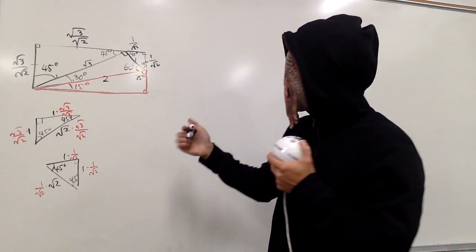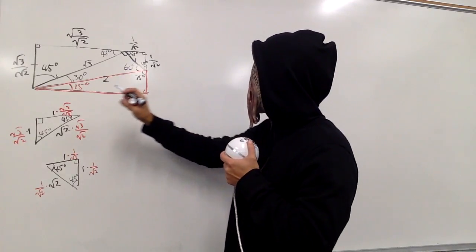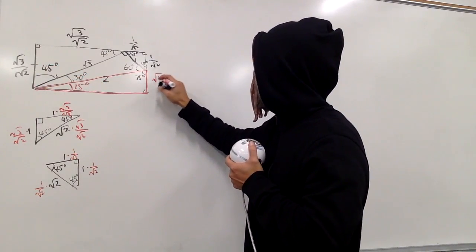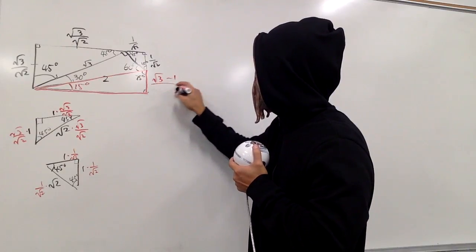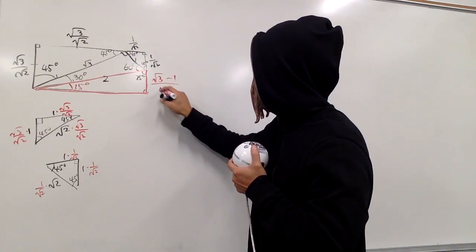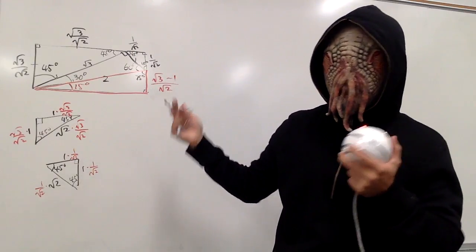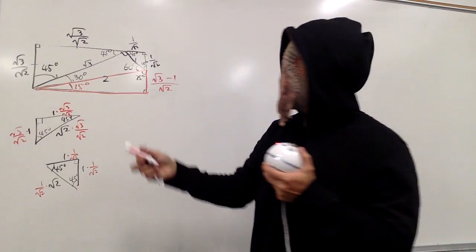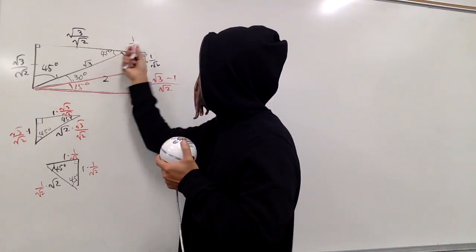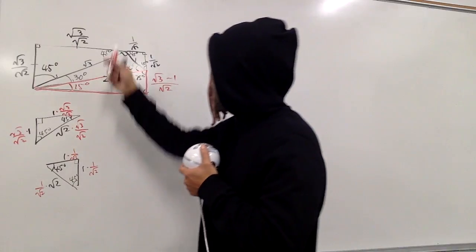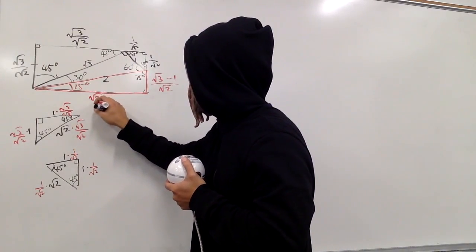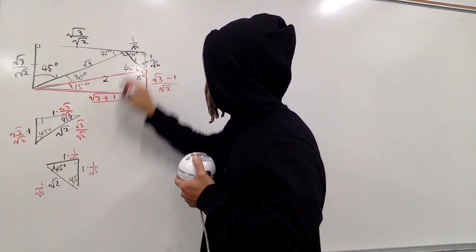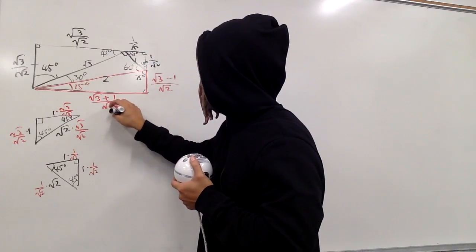I will just put it together for you guys. In other words, it will be square root of 3 minus 1 over the same denominator, which is square root of 2. How about the side down below? Well, it's just going to be this plus that: square root of 3 plus 1 over square root of 2.